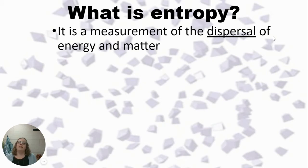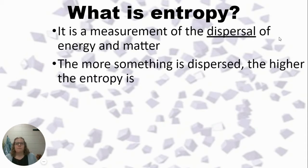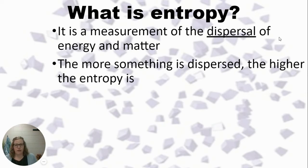The basics: entropy is a measurement of the dispersal of energy and matter. When we talk about entropy changes, we're asking how does dispersal change from our reactants to our products? The more dispersed something is, the higher the entropy value. If we start off more organized and our stuff spreads out at the end, that spread-out state has a higher entropy value. There are rules about entropy of the universe, but they're not necessary for the AP exam.